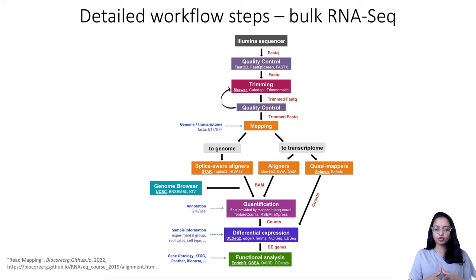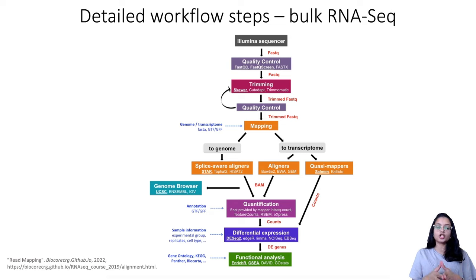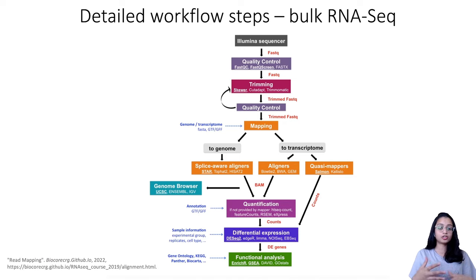Going over the schematic workflow to process bulk RNAseq reads: the first step is to perform quality control of reads from the sequencer, which are in FASTQ files. Tools like FastQC, FastQ Screen, and RNAseqQC are used. The goal is to remove bases of poor quality and any adapter sequences present. To remove these bases or adapter sequences, a trimming tool is needed — commonly CutAdapt or Trimmomatic.